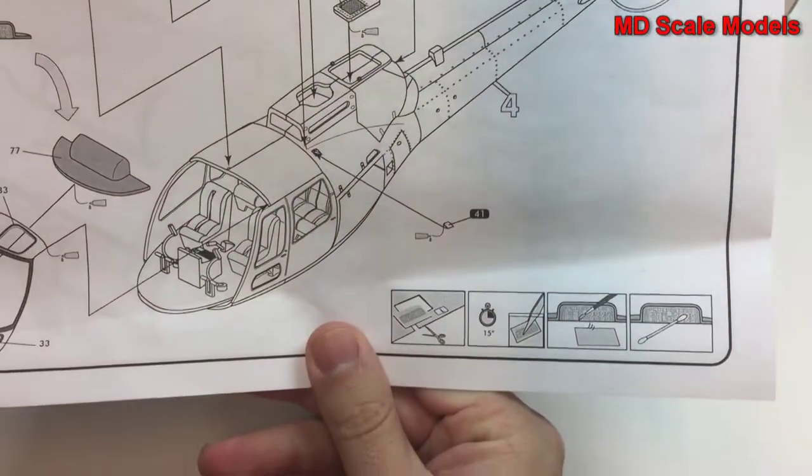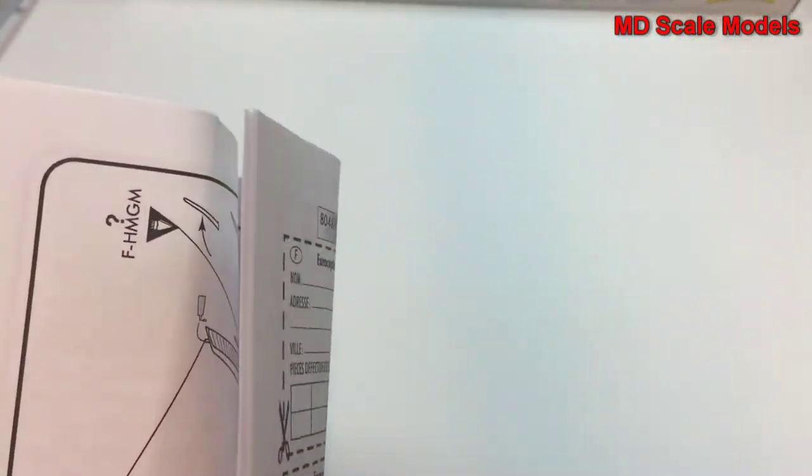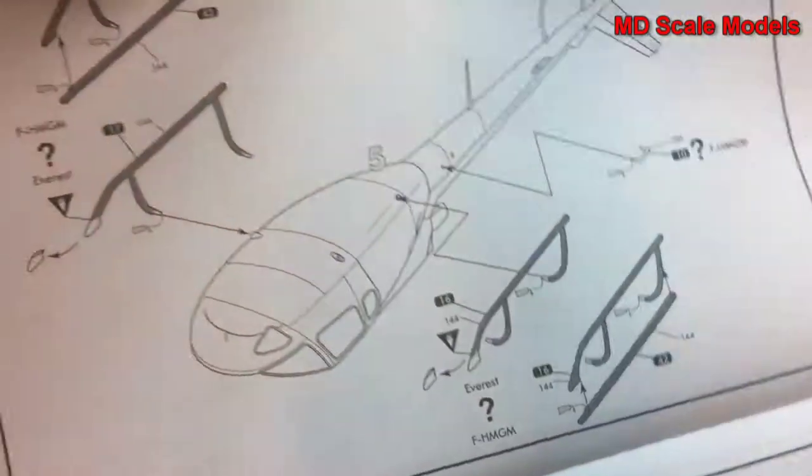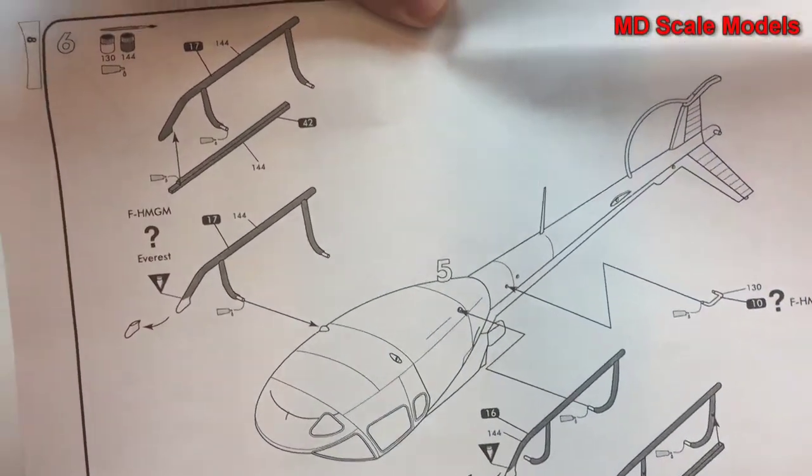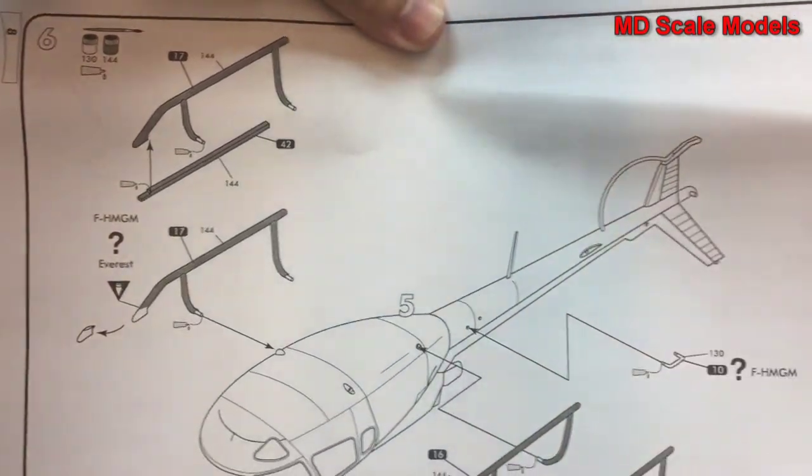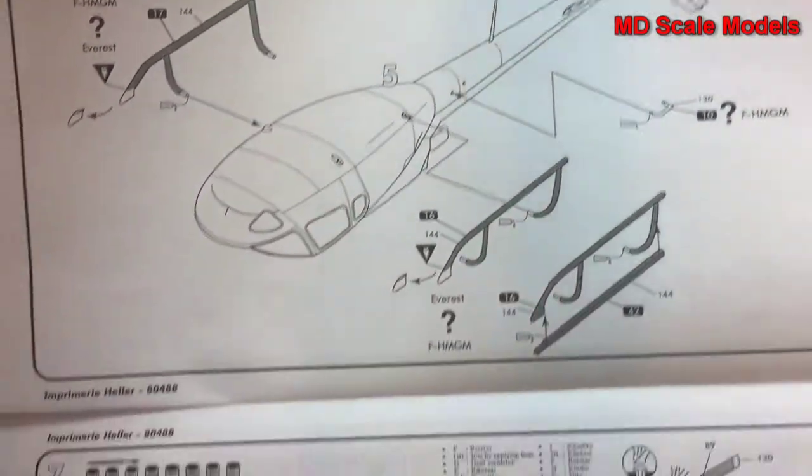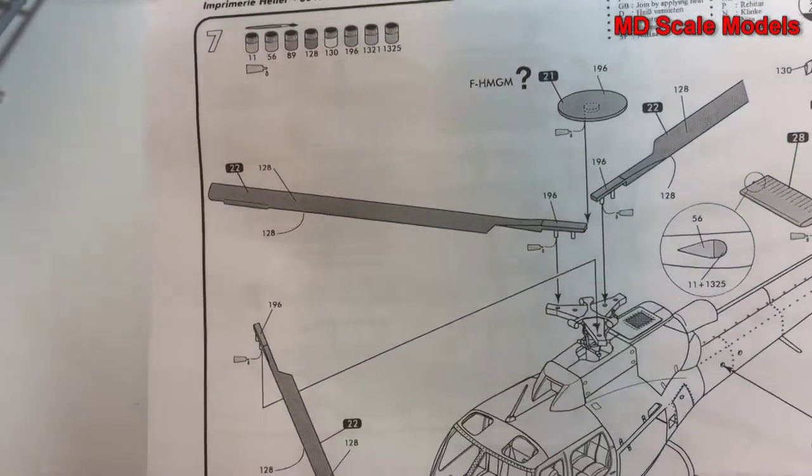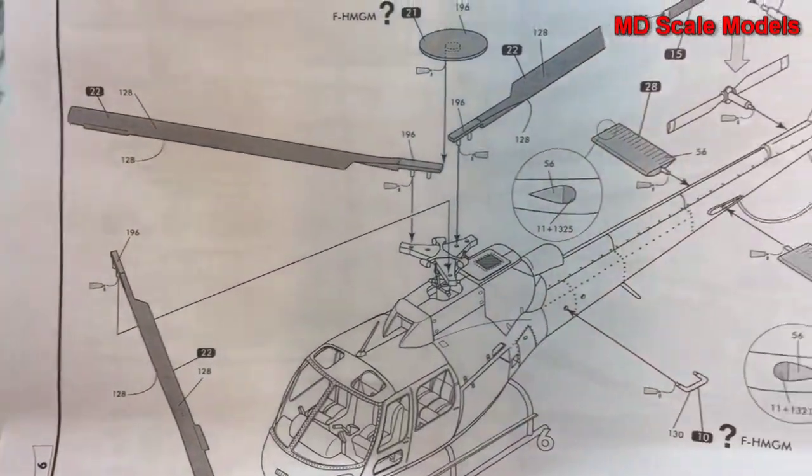Exhaust going on. And it looks like our skids going on with two different options. And then the actual rotors going on. The rotor assembly.